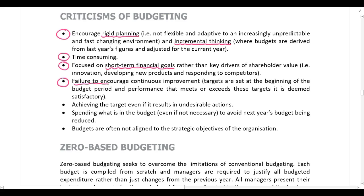Budgets fail to encourage continuous improvement. Targets are set at the beginning of the budget period and performance that meets or exceeds these targets is deemed satisfactory. For example, if the targets are already achieved in September, after that point there is no motivation for any further improvements — employees are just going to relax because all of the targets for the year have been achieved.